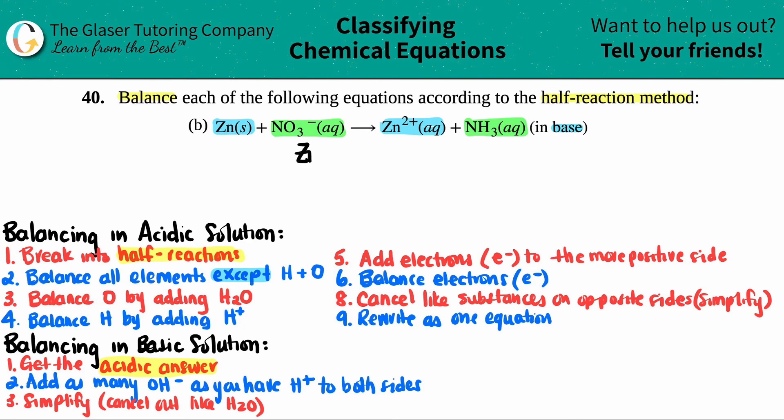So let's write out the two half reactions. I have zinc solid yields zinc 2+ aqueous. And then my other one would be NO3⁻ aqueous yields NH3, and that's also aqueous. Step one done.